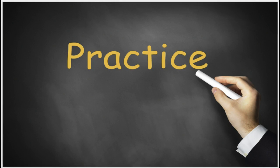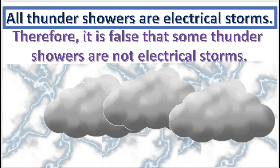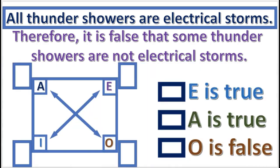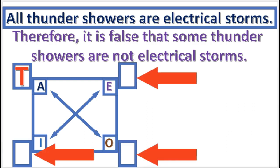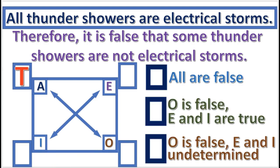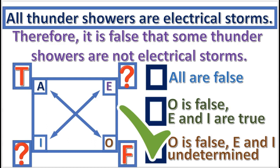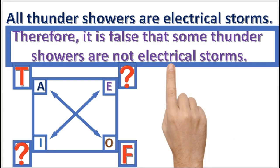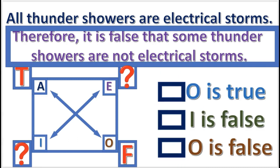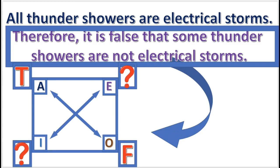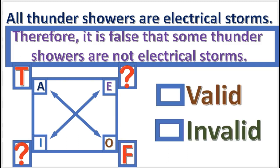Let's work a few practice problems. Practice problem number one: for the premise, what truth value do you enter into the square of opposition? A is true — the premise is an A proposition, and we assume that it's true. Next, what is the truth value for the other propositions? O is false, because it is the contradictory of A, and E and I are undetermined. Next, what does the conclusion claim? The conclusion claims that O is false. Since the conclusion matches the square, the inference is valid.